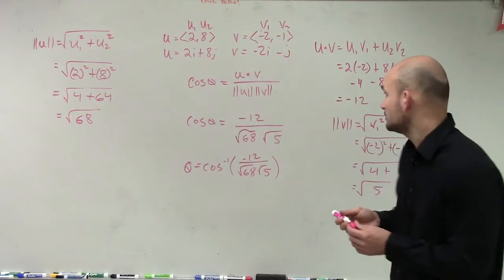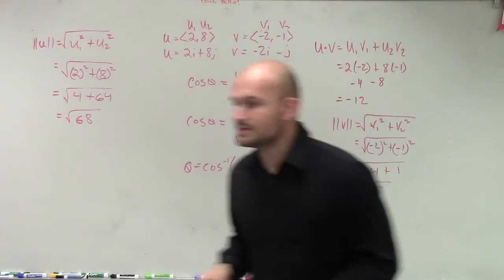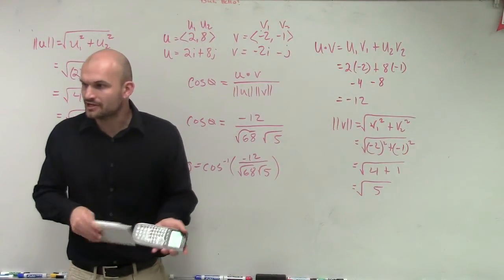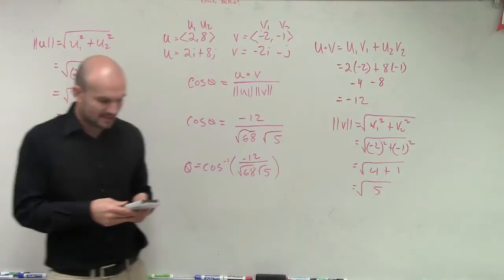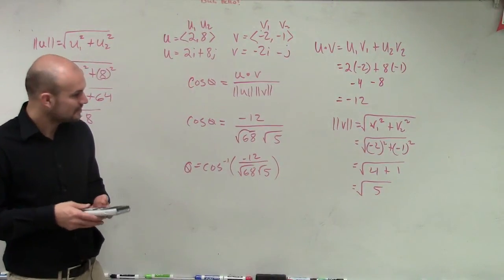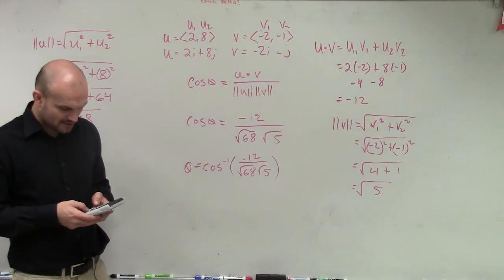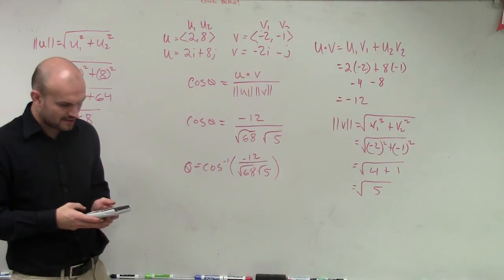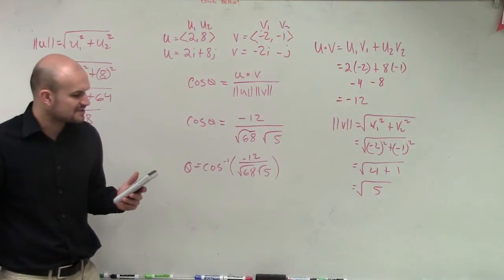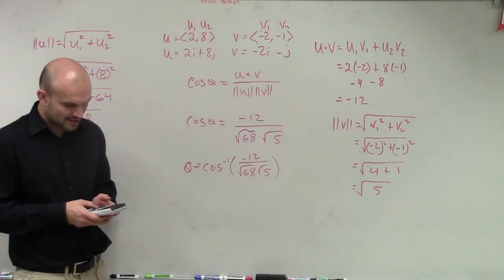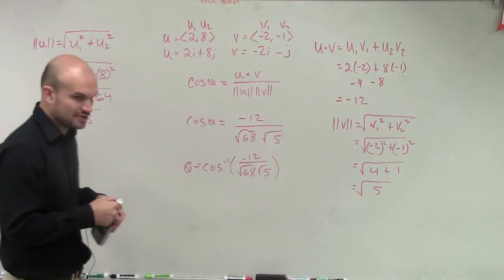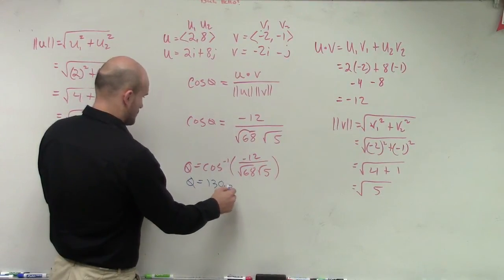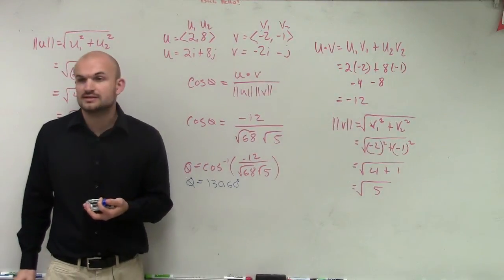When doing this on your calculator, you don't need to simplify the radicals since you're finding an approximate value anyway. Make sure your calculator is in degree mode. Take the square root of 68 times the square root of 5, then compute negative 12 divided by that result, giving negative 0.65079. Taking the inverse cosine of that, the angle between the two vectors is approximately 130.60 degrees.